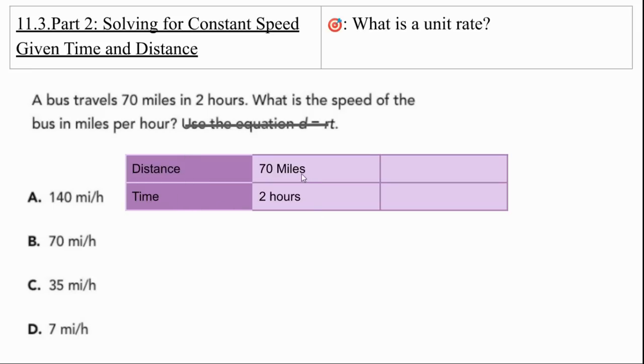Distance and time. So the bus travels 70 miles in two hours. What is the speed of the bus in miles per hour? If it goes 70 miles in two hours, we think about that relationship. How far does it go per hour? Do we think it's going to go 140? Is it going to be 70 miles per hour? Is it going to be 35? Is it going to be 7? Let's think about this relationship.